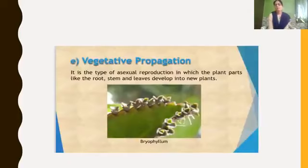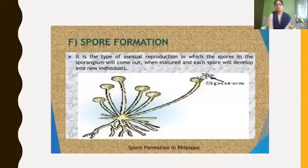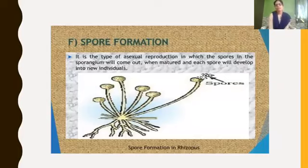The next type of asexual reproduction is vegetative propagation. It is a type in which plant parts like roots, stem, leaves develop into new plants. Here in this picture you can see a vegetative part — the leaf — and how it develops into a new plant. The example is bryophyllum. This we have also learnt in seventh standard. Then spore formation: it is a type in which spores in the sporangium burst out after maturation, and each spore develops into a new individual. The example is mucor or rhizopus.